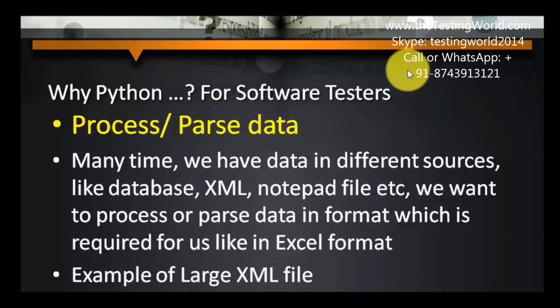Another example: filling complete information across different pages of an application, and at the end when we submit, an XML file is generated with all the data filled in the complete process. The manual task was to go to the final XML and validate all the data filled across those 12 pages — a very difficult task to do manually. For that kind of activity, we can validate the data in the XML file by using Python or any other scripting language, since Python has a rich set of libraries to validate content in any format file.